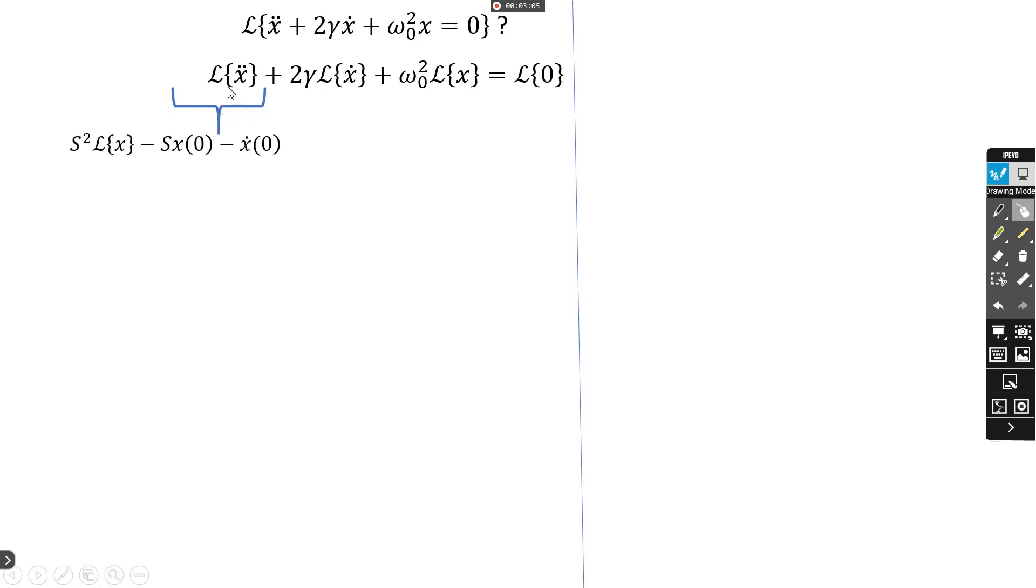First, for Laplace x double dot, which means second derivative, it's going to this result: s² Laplace x minus s x(0) minus x dot(0), where s is Laplace transform variable, x(0) is initial displacement, and x dot(0) is initial velocity.